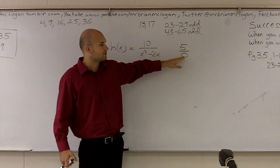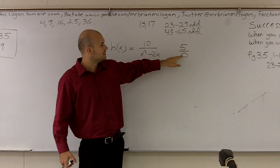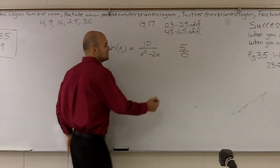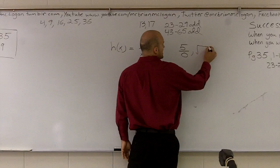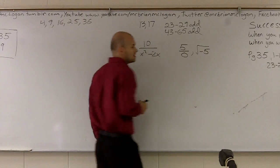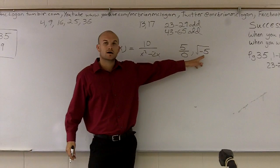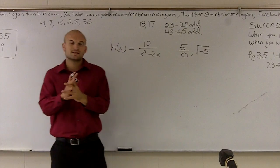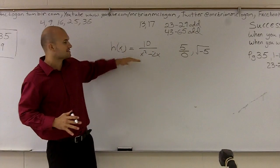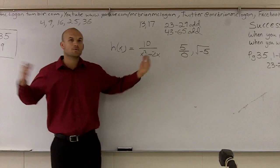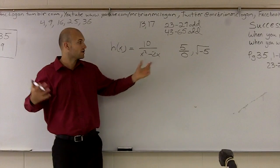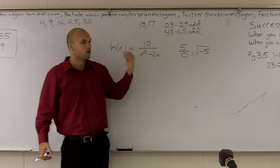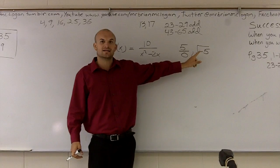So we know we can't divide by zero. The other thing we cannot have — if you guys remember imaginary numbers — is you also can't have a value that's negative under a root. So when we're looking at a graph, the domain is all real numbers except for any x value that gives us a zero on the bottom, or any x value that gives us a negative under the root.